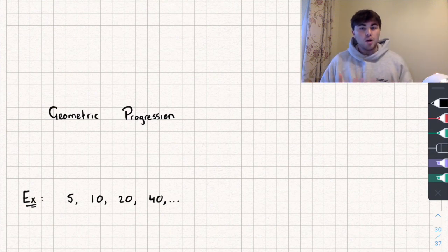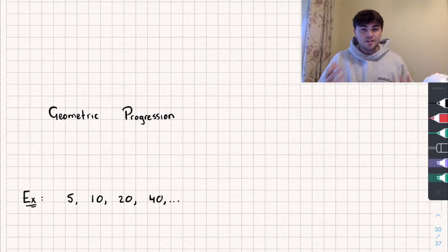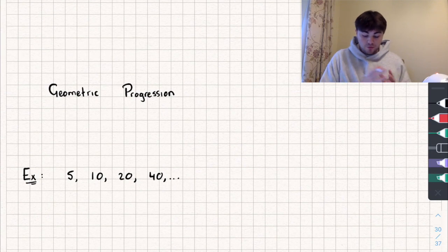So let's start off with what is a geometric progression. It's going to be a sequence, and I've got one here below, it goes 5, 10, 20, and 40.